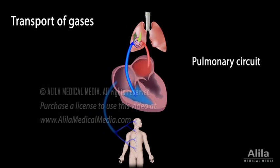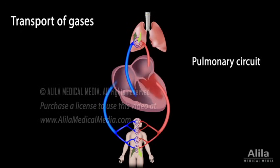The left side of the heart pumps oxygen-rich blood to the body's tissues, where it unloads oxygen and picks up carbon dioxide. The resulting deoxygenated blood again returns to the heart's right side to complete the cycle. This part is the systemic circuit.